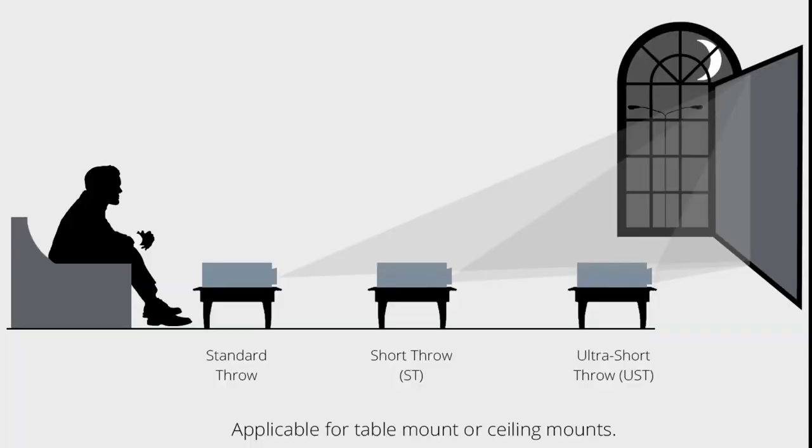The third type — the ultra short throw projector — primarily sells more in living room applications right now. In the living room, you want a 100-inch screen but don't want a projector hanging from far away. So you keep the projector very near to the screen, right below on the shelf, and through that you can achieve a good 100-inch screen. With these three types clear to you, you can make wiser decisions, because all projector companies offer long throw, short throw, and ultra short throw options.